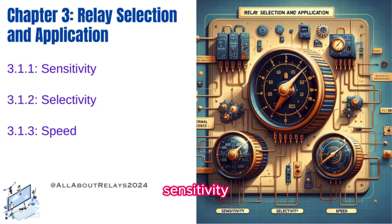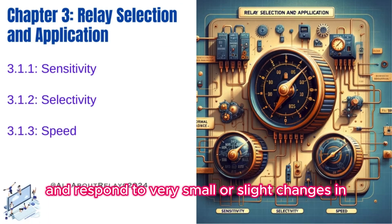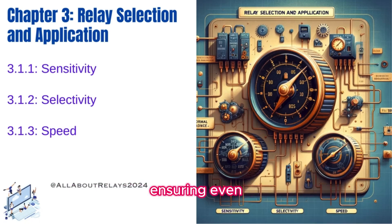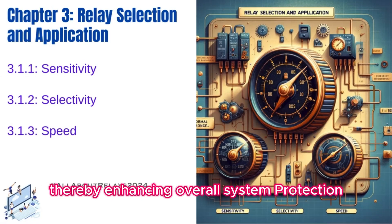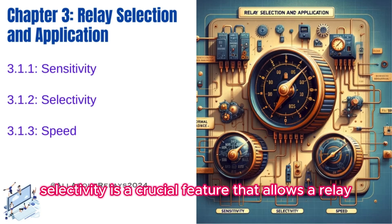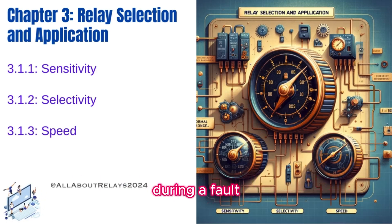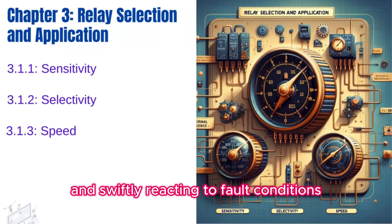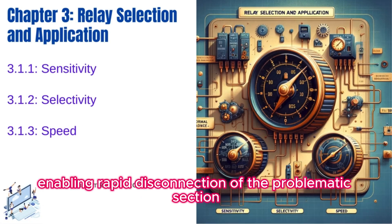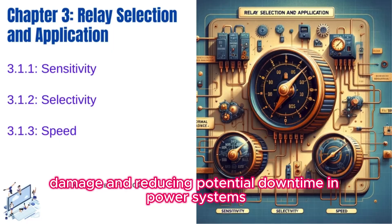Protective relay selection and application. Sensitivity refers to a relay's ability to detect and respond to very small changes in the electrical parameters it monitors, ensuring even subtle anomalies are not overlooked, thereby enhancing overall system protection. Selectivity allows a relay to precisely identify and isolate only the affected part of an electrical system during a fault, preventing unnecessary interruption to the rest of the network. Speed is critical in swiftly reacting to fault conditions, enabling rapid disconnection of the problematic section, thereby minimizing damage and reducing potential downtime in power systems.